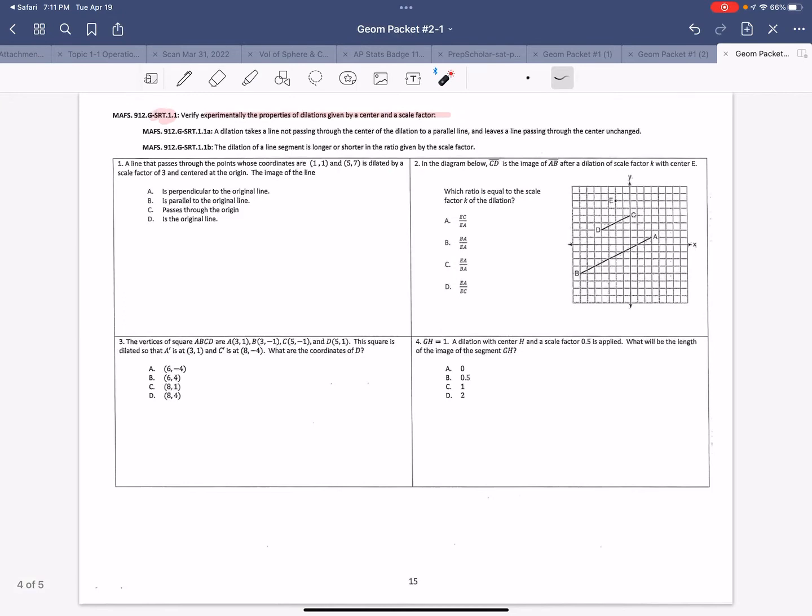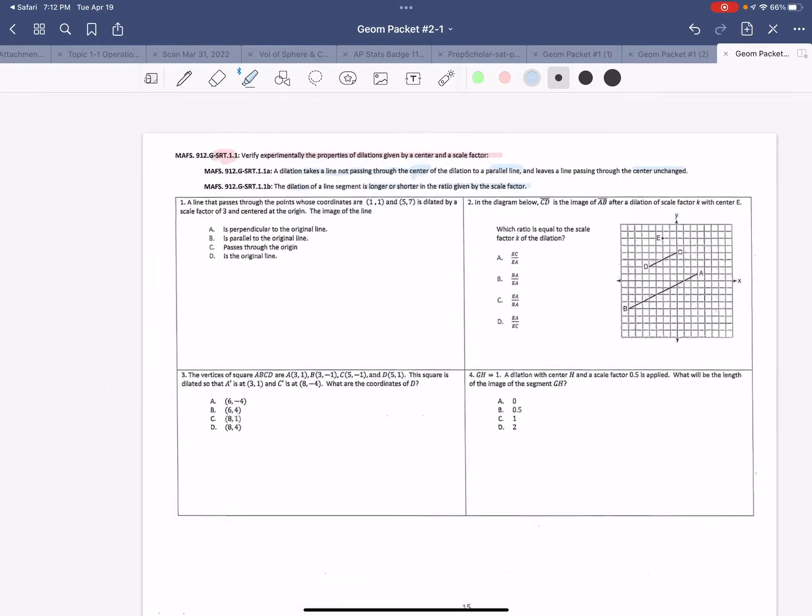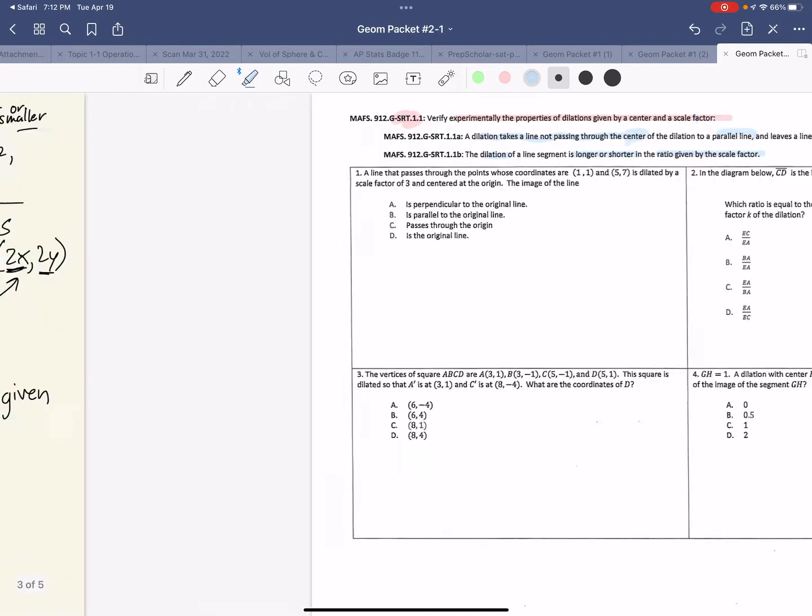Okay, so let's answer some questions about this question. This learning rule says the dilation takes a line not passing through the center to a parallel line and leaves a line passing through the center unchanged. The dilation of a line is longer or shorter in the ratio given by the scale factor. Okay, so what do each of those mean? A dilation takes a line not passing through the center to a parallel line.